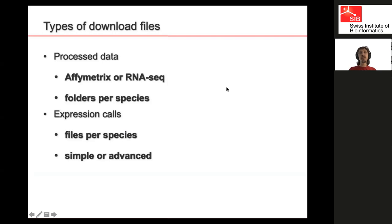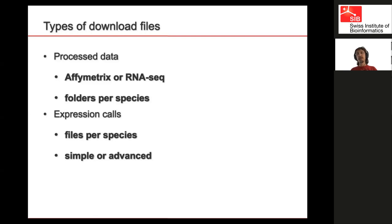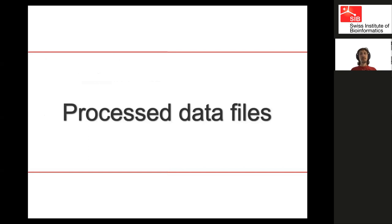We have two main types of download files: files of what we call process data and files of expression calls. The process data is levels of expression essentially, and we only provide them for Affymetrix and RNA-seq, in separate folders per species with a file per experiment. The expression calls have a file per species with calls summarized from the data, as Frédéric just explained. There are simple files with just the summary, and advanced files with all the detail. All this is entirely documented on the BGee website and on GitHub.